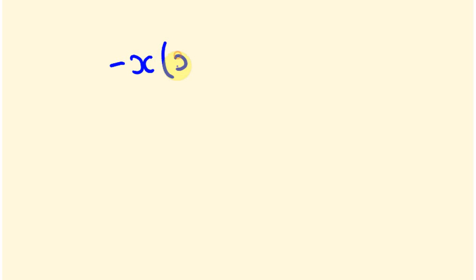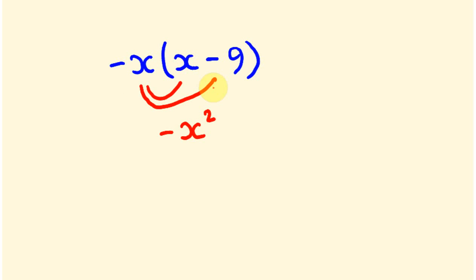Let's do another example. What about minus x(x−9)? That's a bit more difficult but it's exactly the same process. Minus x times x — if you get stuck, substitute a value: like minus 3 times 3 is minus 9 — so we end up with minus x squared. Then minus x times minus 9: a minus times a minus is a positive, so we get plus 9x. If you make a mistake, don't get too despondent — just work out where you went wrong and try not to make that mistake again.